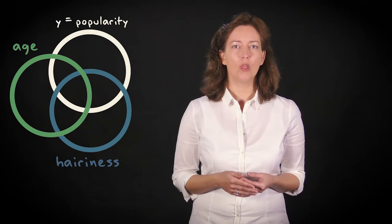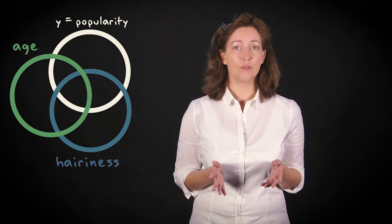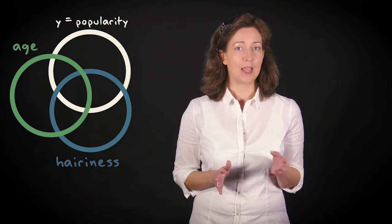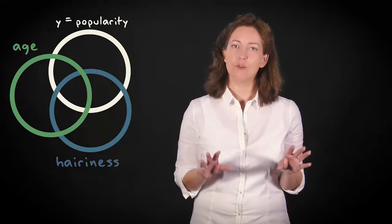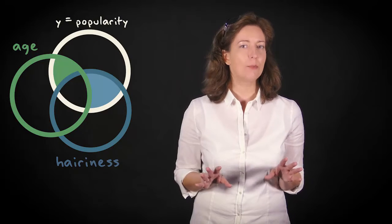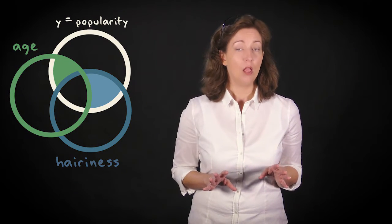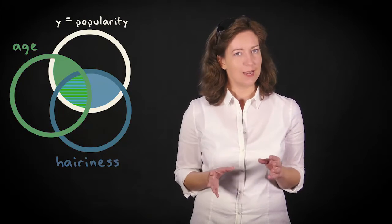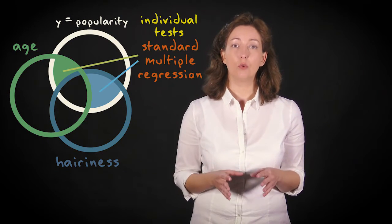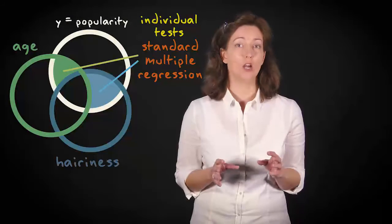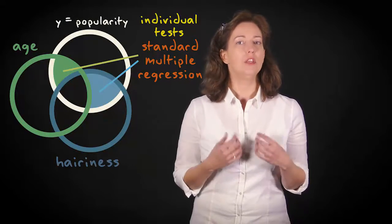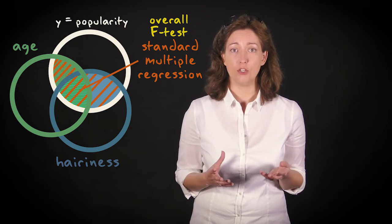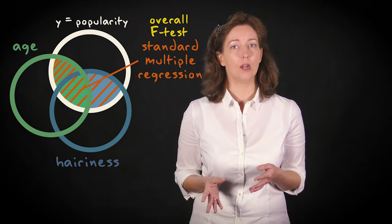Consider this Venn diagram showing the total variation in the response variable. The predictors, cat age and hairiness, each capture or explain a unique part of the response variable. But they also show some overlap with each other. In standard multiple regression, the individual t-tests assess the unique contribution of the predictors. The overall test assesses the overall association of the predictors with the response variable.